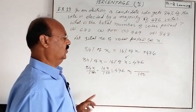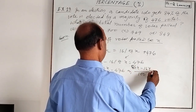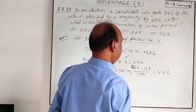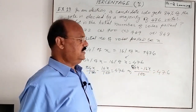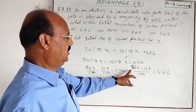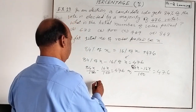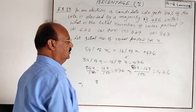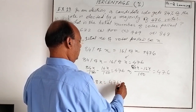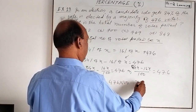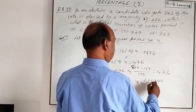So in the numerator, 84X minus 16X equals 476. By cross multiplication, 100 will go to the right-hand side and multiply 476. In the numerator, 84 minus 16 gives us 68X equals 476 into 100.